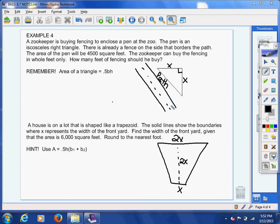8.7. We're going to do a little bit of an application to the square root property we've been learning all about. Here's our scenario. We've got a zookeeper who is buying fencing to enclose a pen at the zoo.